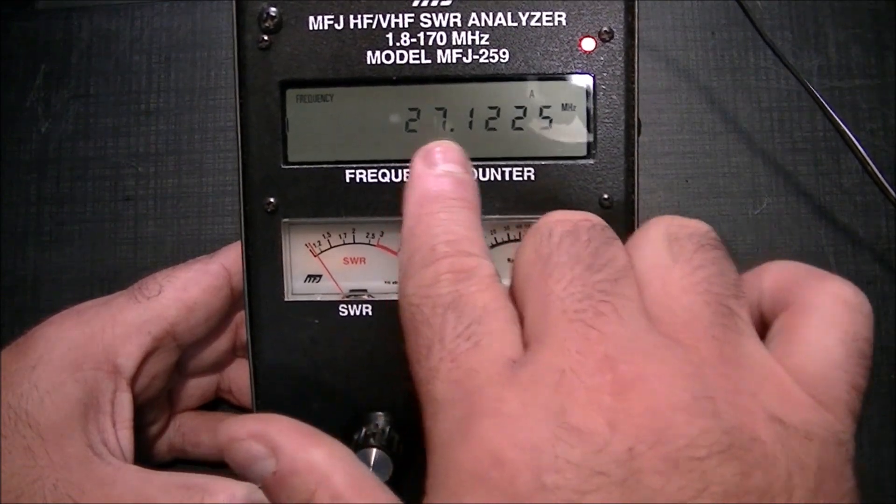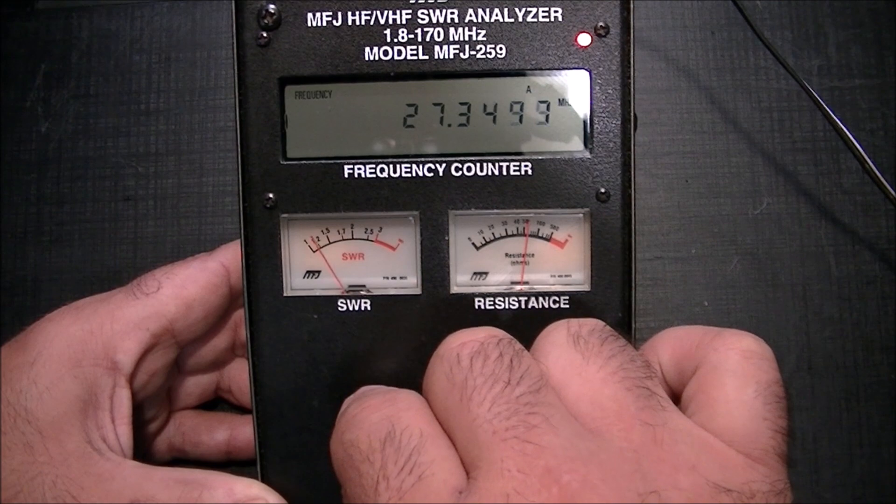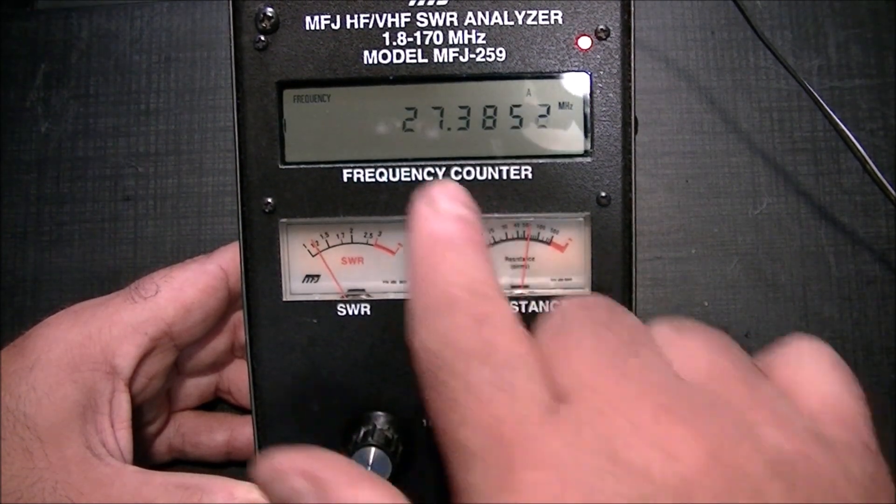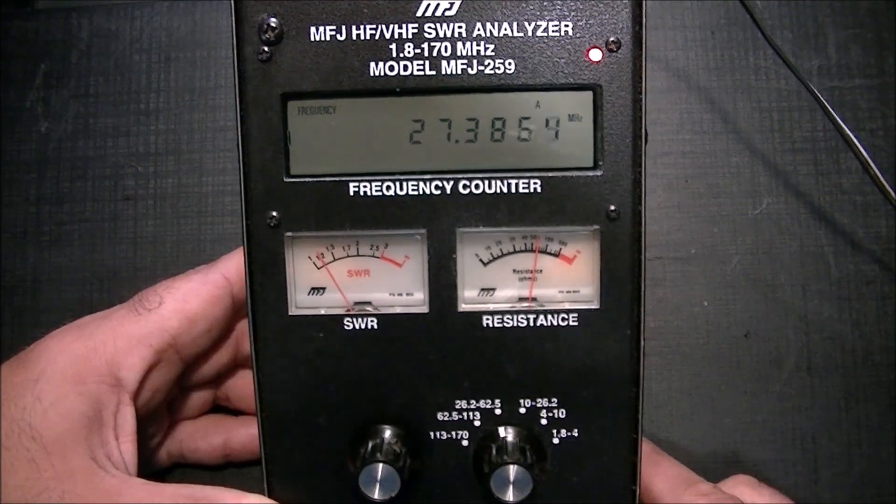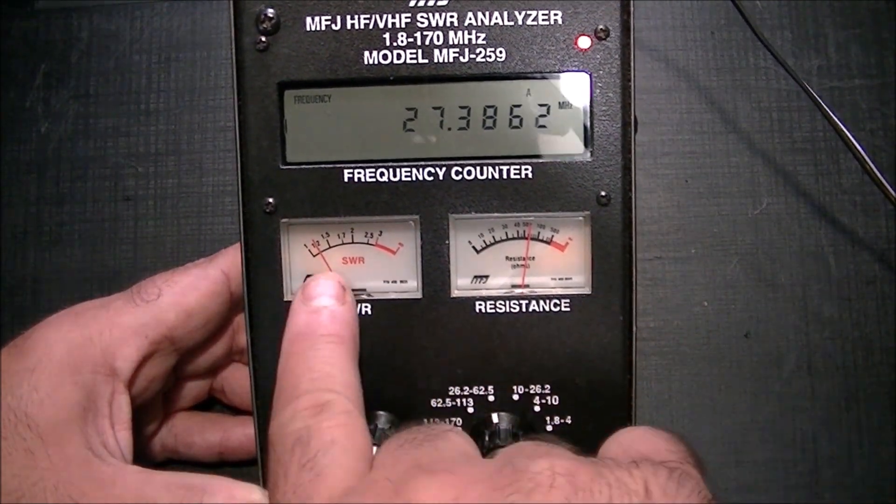My antenna is resonant at around 26.658, so just below channel one. And if I dial the other way I'm climbing up into the 27. Now let's go up to 385 and see what she looks like there.